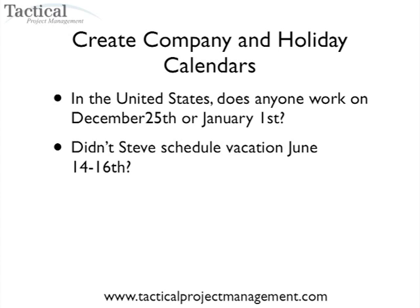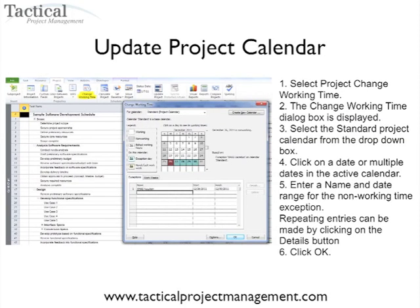Think about your team member Steve — didn't he schedule vacation on June 14th through the 16th? If Steve is scheduled for work in the project schedule, you're going to run into end date problems because he's out fishing. To update the project calendar, select Change Working Time from the Project Menu tab. The Change Working Time dialog box will be displayed, and if you select the standard calendar, you can click on a date range and enter the name and specific date range for the non-working time. In this case, I put in Christmas Vacation for the entire team from December 26th through December 30th, so Microsoft Project will advance the dates and realize that no one is scheduled to do work at that time.